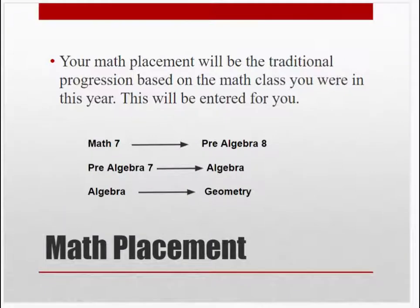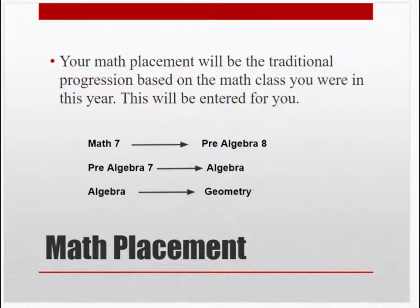The math placement you'll receive will be based off of a traditional progression based on the math course you had this year. So if you were in Math 7 this year, you'll be in Pre-Algebra 8 next year. If you were in Pre-Algebra 7, you'll be in Algebra. And if you were in Algebra this year, next year you'll be in Geometry. These will be entered in for you — you will not select these yourself.